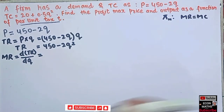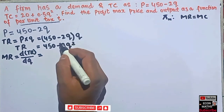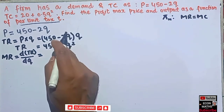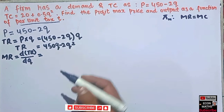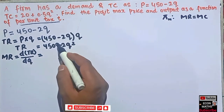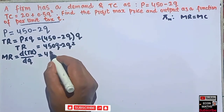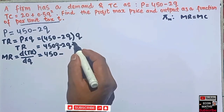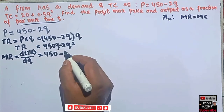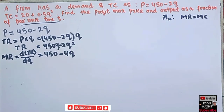The derivative of 450q is 450, and the derivative of 2q squared is 4q, so marginal revenue comes out to MR = 450 minus 4q.